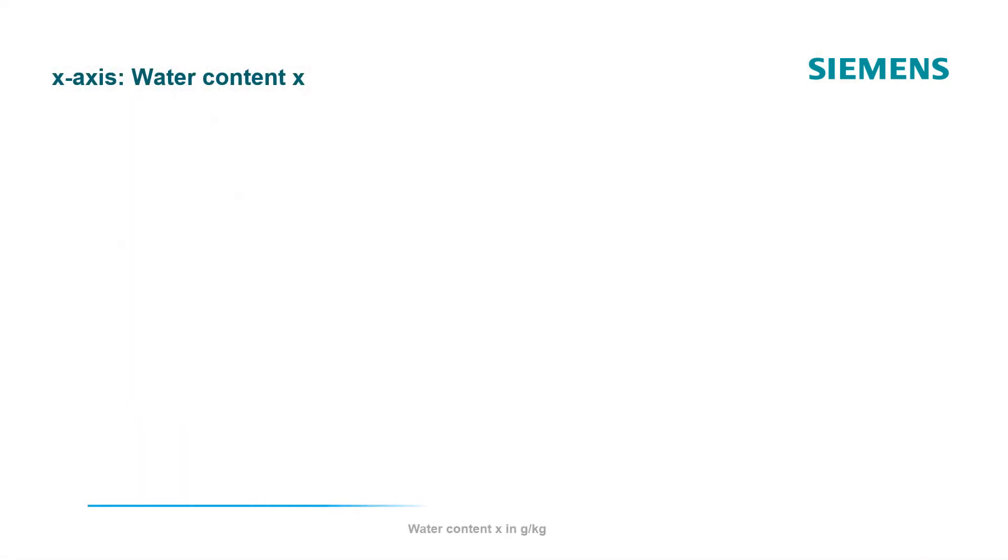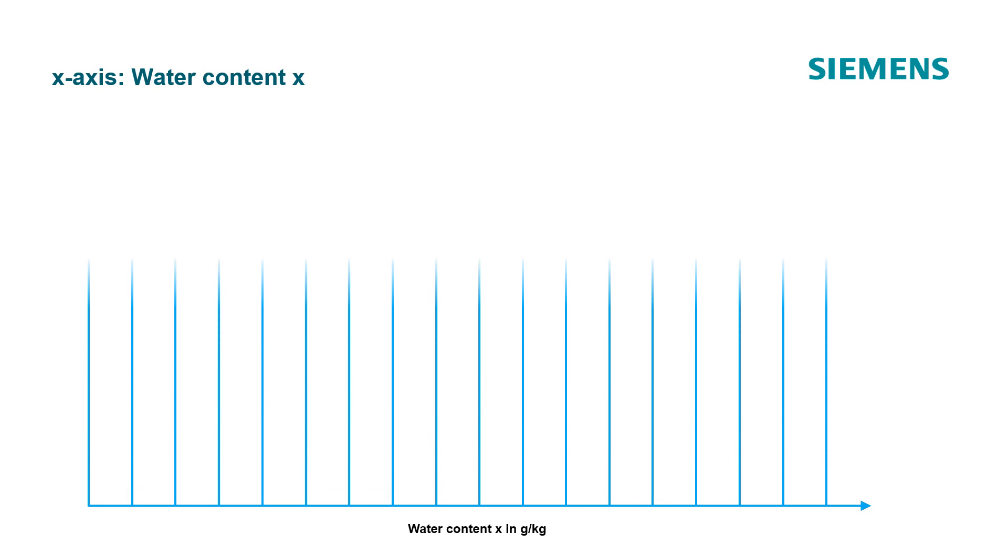On the x-axis of the chart, the water content x in gram water per kilogram air is shown. This water content is also referred to as absolute humidity. The vertical straight lines each represent a constant water content.